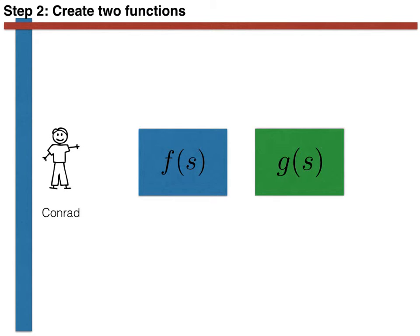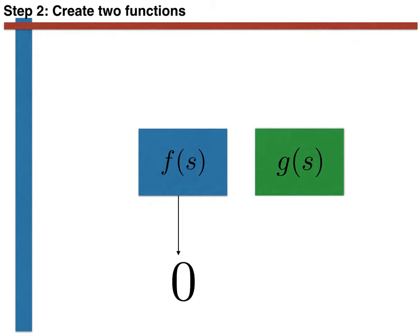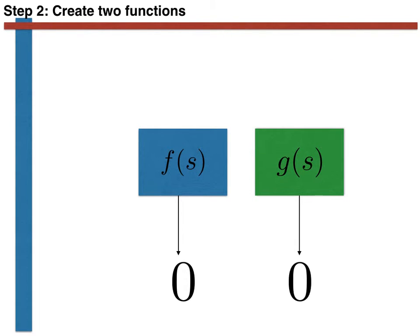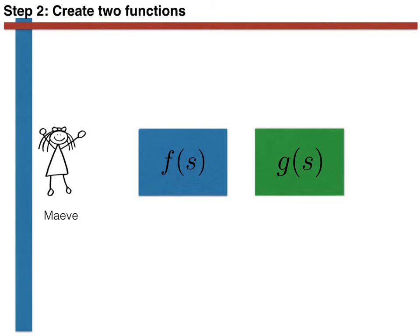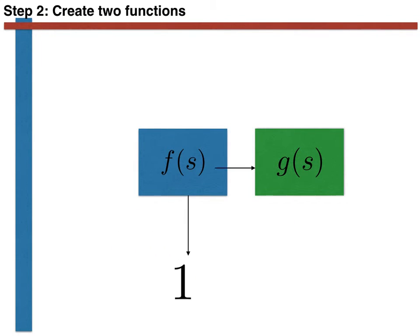To be absolutely crystal clear, let's try these functions on some people. Let's first try Conrad. Conrad is a boy and thus f(s) is equal to 0. Furthermore, Conrad has a name that starts with C and not M, and thus g(s) is 0. By contrast, if we try this function with Maeve, f(s) is equal to 1 as Maeve is a girl, and g(s) is equal to 1 as Maeve begins with M.